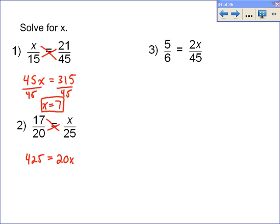Those are equal because you have a proportion and your cross products of a proportion are equal. You divide both sides by 20 and you end up with x equals 21. If you divide 425 by 20, they end up being 21.25. And that's your value for x on that one.